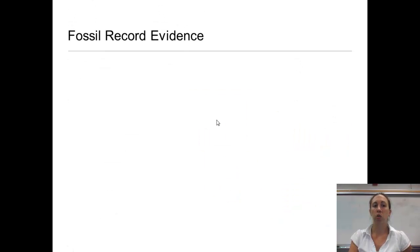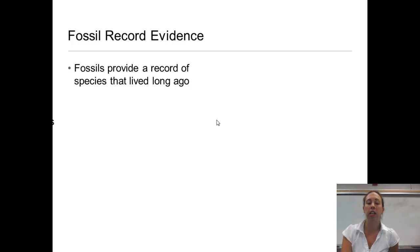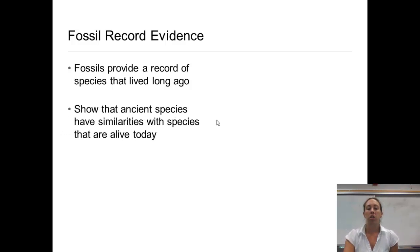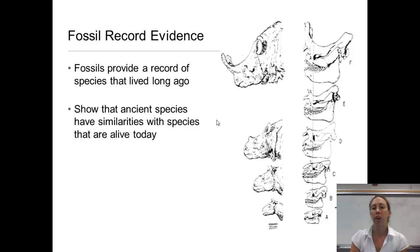Fossil record evidence: fossils provide a record of species that lived long ago and show that ancient species have similarities with species alive today. You can look at fossils and compare them to living creatures to observe how they're the same and different, and see how past organisms have evolved.